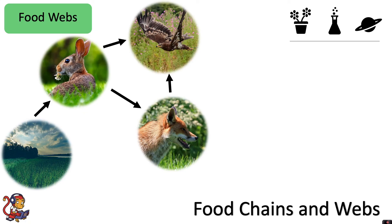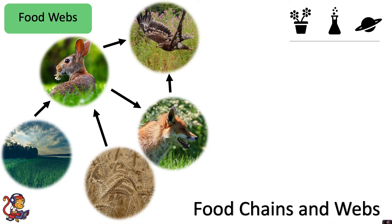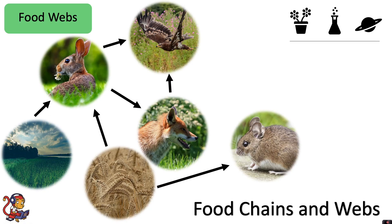That leaves the eagle much less vulnerable, because if all the foxes died out due to hunting or disease, it could switch its prey to the rabbit. The rabbit might not just eat grass — it might also eat wheat or other cereal crops, which are also eaten by mice. And perhaps the mice are also eaten by the fox and the eagle.